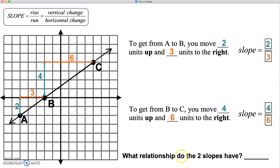So what relationship do these two slopes have? Well, 2 over 3 is the slope from a to b, and the simplified slope from b to c is also 2 over 3. They're equal, which illustrates that point that the slope remains constant between any set of points.